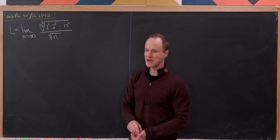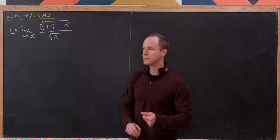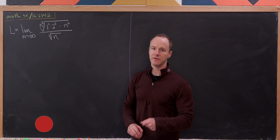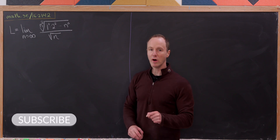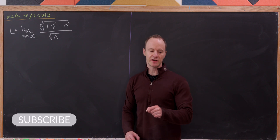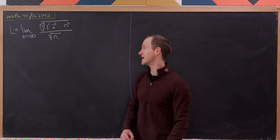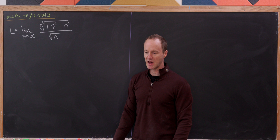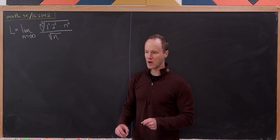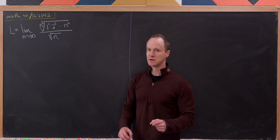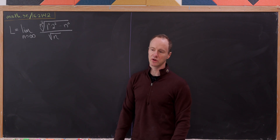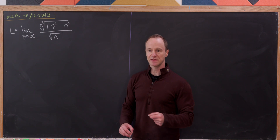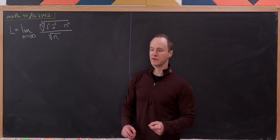Let's look at this nice limit that I found on the Math Stack Exchange. We've got the limit as n goes to infinity of the n-squared root of this ascending product: 1 to the 1 times 2 to the 2 times 3 to the 3 times 4 to the 4, ending at n to the n, all divided by the square root of n. This repeated product, along with the limiting variable appearing in both the base and the exponent, points us toward doing some sort of simplification procedure involving a logarithm.